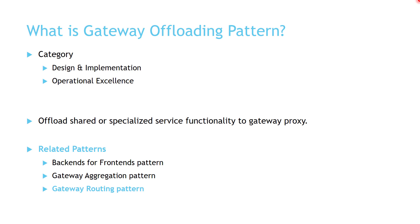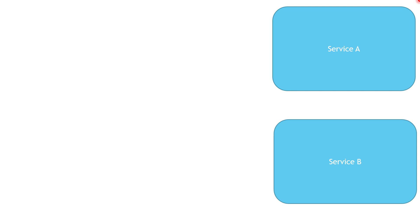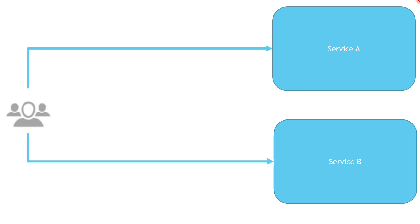Now let's go to the examples to help us understand what challenges the Gateway Offloading pattern is trying to solve. Let's assume that our system has two services, Service A and Service B, and an external client that wants to interact with our services. Part of this interaction, we need to implement certain features — most importantly, authentication. We want Service A to be able to tell who is calling it, whether it's a user, system, or service account.